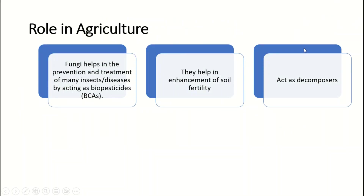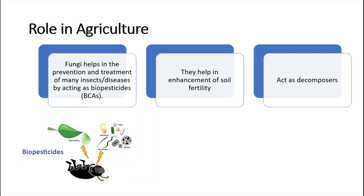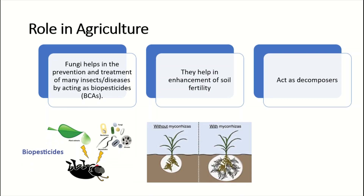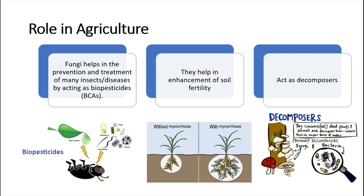Regarding the role of fungi in agriculture, fungi help in the prevention and treatment of many insects and diseases by acting as biopesticides or biocontrol agents. They help in enhancement of soil fertility — for example, mycorrhizae and other fungi enhance soil fertility — and they also act as decomposers.